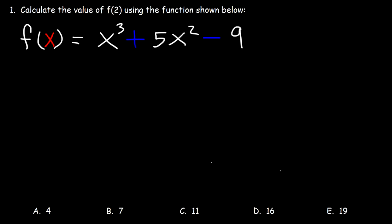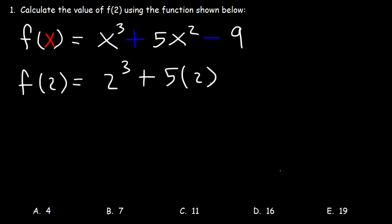Number one: calculate the value of f of 2 using the function shown below. So all we need to do is replace x with 2. So we have 2 to the third plus 5 times 2 squared minus 9.